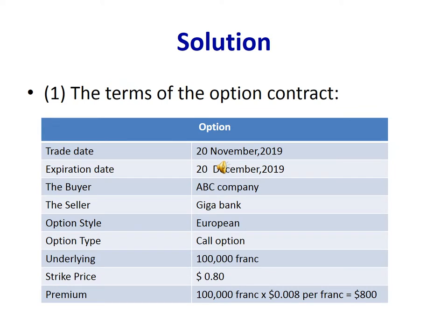First, we need to explain the terms of the option contract. The trade date was November 20 and the expiration date December 20. The buyer is APC company and the seller is Gigabank. Option style: European. Type of option: call option. Underlying: 100,000 francs. Strike price: $0.08. Premium: 100,000 francs multiplied by $0.008 per franc, resulting in $800.